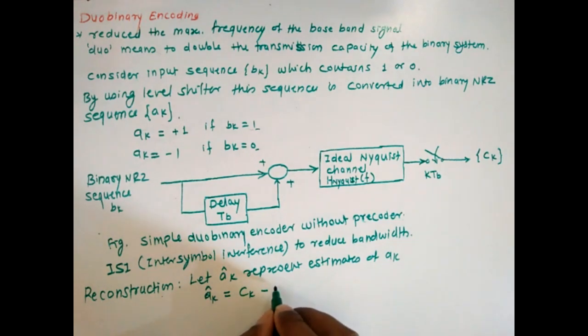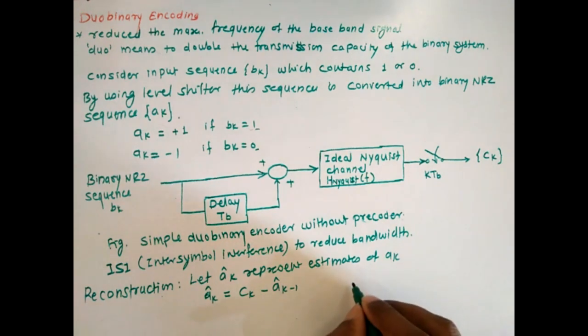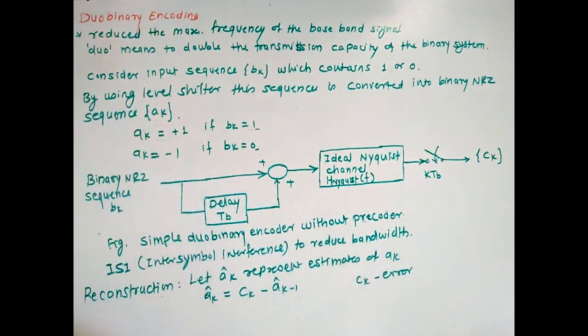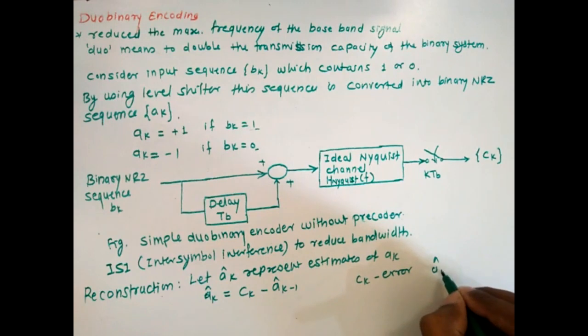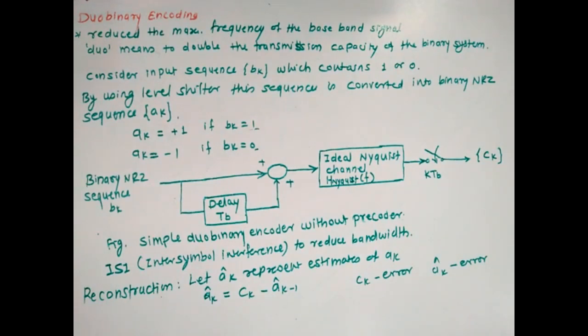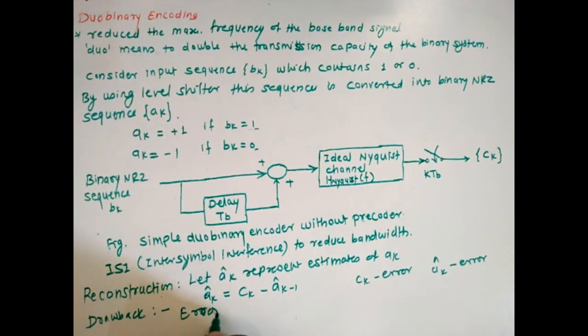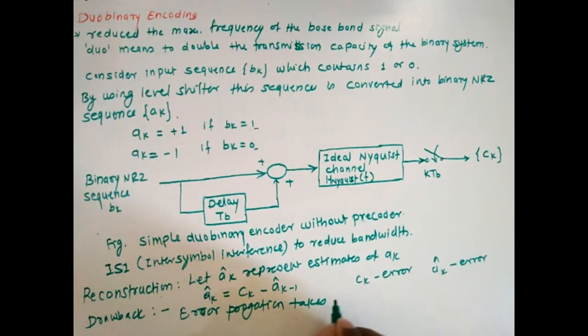And this shows that if ck is introduced with error, then ak bar will also have error, and this error is propagated to the output. And that's why this is the drawback of this simple duo binary encoder without pre-encoder - that error propagation takes place in the decoder.